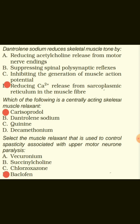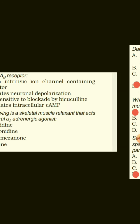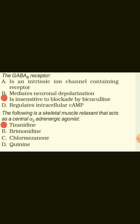Dantrolene sodium reduces skeletal muscle tone by reducing calcium release from the sarcoplasmic reticulum in the muscle fiber. Carisoprodol is a centrally acting skeletal muscle relaxant. Baclofen is the muscle relaxant used to control spasticity associated with upper motor neuron paralysis. The GABA-B receptor is insensitive to blockade by bicuculline. Tizanidine is a skeletal muscle relaxant that acts as a central alpha-2-adrenergic agonist.